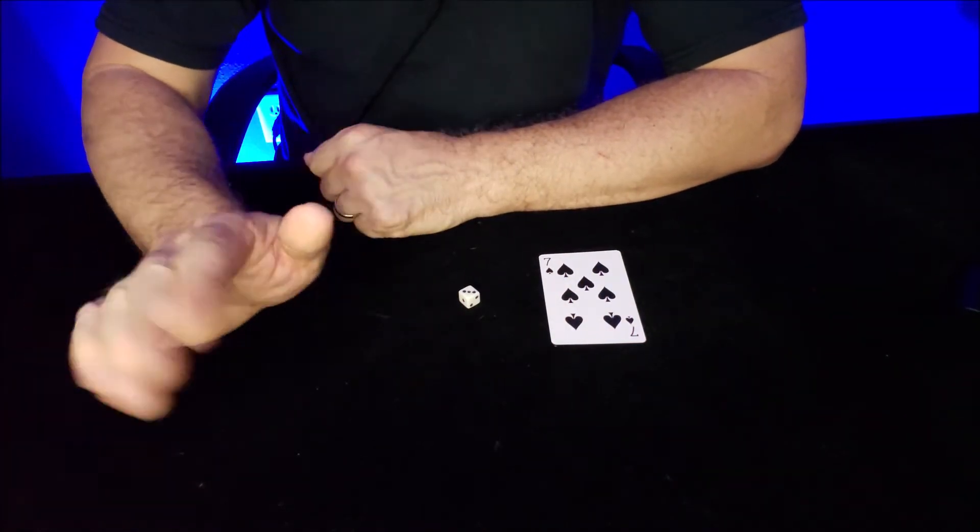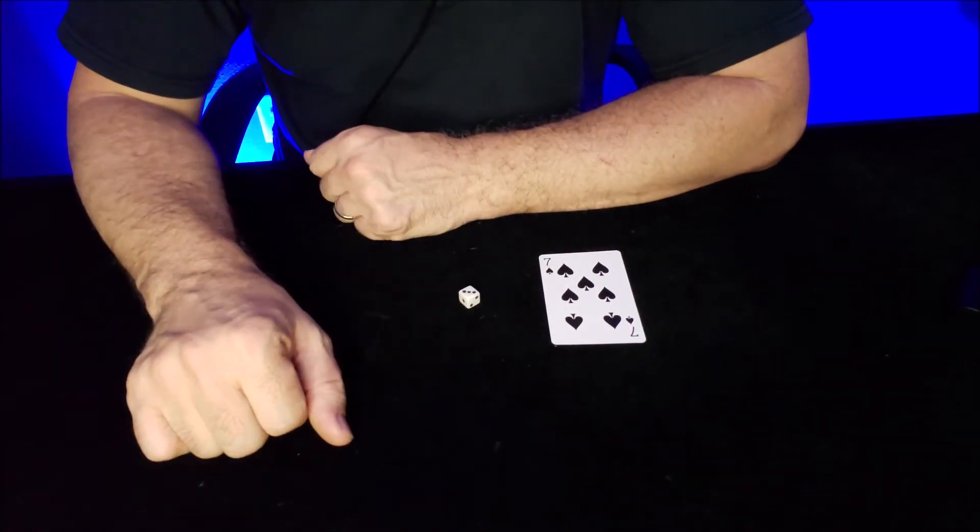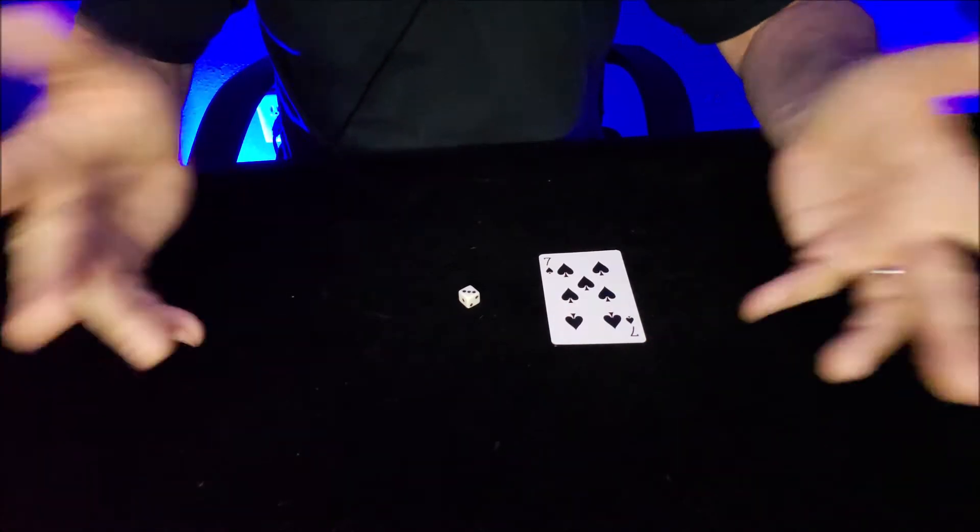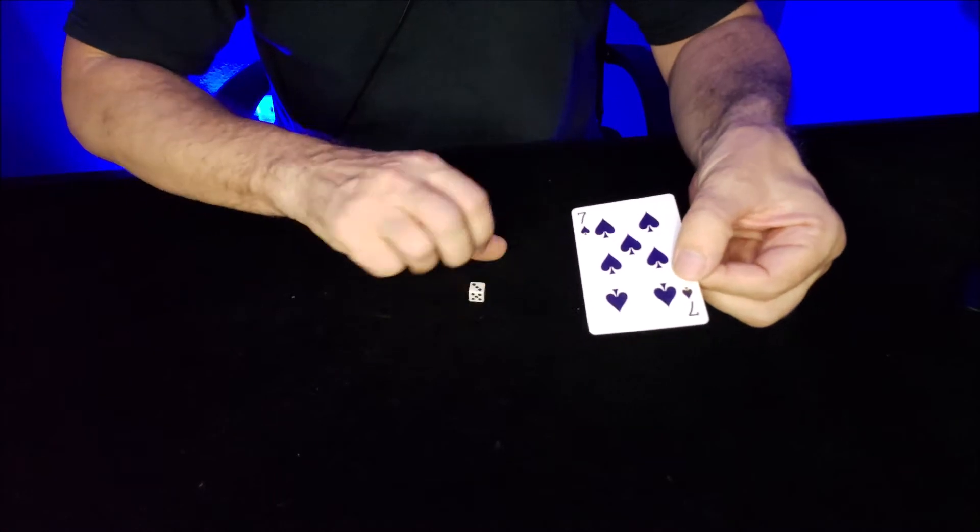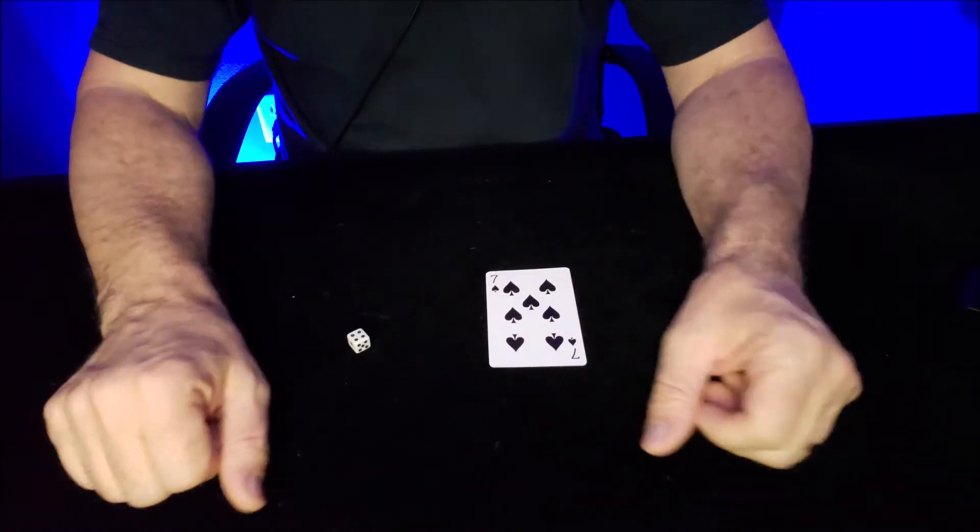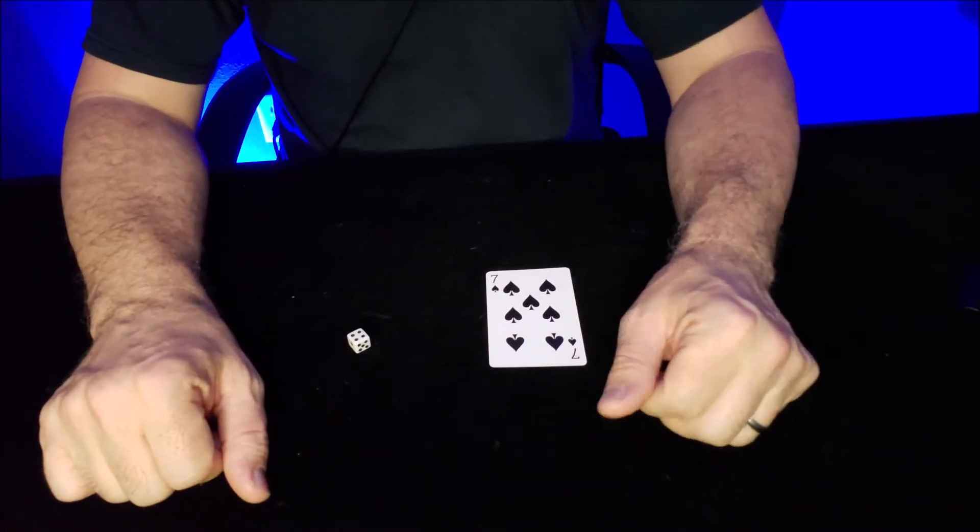Now the great thing about this is, even if you don't have the Marvin's Magic Kit, you can still do this trick. All you need is a seven and a die. Carry those with you and you can do a magic trick. Here's what you do.